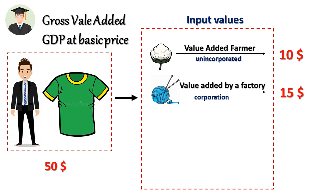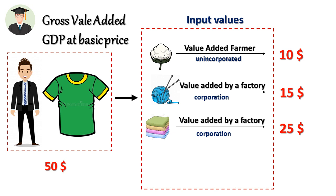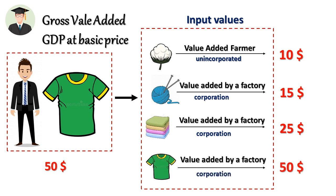Do you have any idea why the yarn price is higher than the cotton price? Yes — that yarn is produced by using cotton, that is why the price increases step by step. On the other hand, another producer produces clothes by using yarn. The price of one unit of clothes is $25, and using these clothes Daniel Christian can produce T-shirts for the market.